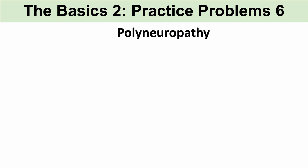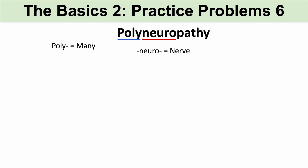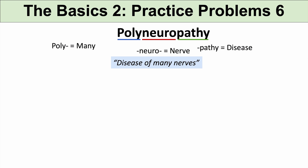The next practice problem is polyneuropathy. The prefix poly means many. Neuro means nerve. And the suffix pathy means disease or disease of. So polyneuropathy literally means a disease of many nerves.